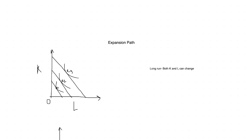In this video lecture we are going to talk about expansion path. As we know in producer's theory, there is the short run and the long run. In the long run, both capital and labor can change. As you can see in the graph, we have drawn a long-run producer's equilibrium, with multiple isocost lines and multiple isoquants. The producer's equilibrium is where the isocost is tangent to the isoquant. E1, E2, and E3 are three producer's equilibria, and if we join these points, the path we get is known as the expansion path.